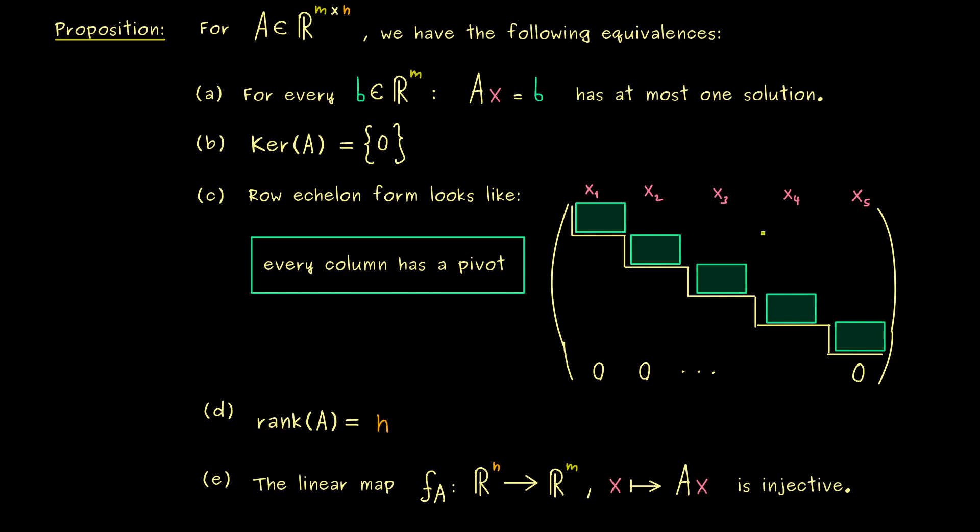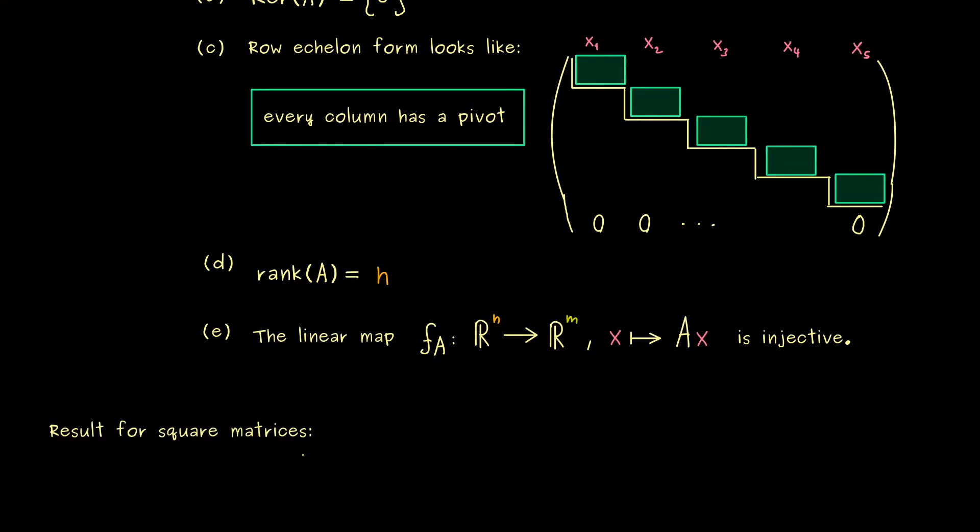Okay, so in summary you see, this is a very important statement about the uniqueness of solutions of a system of linear equations. And please note that the proof of all the equivalences we have already given in the discussion. So there is nothing we have to write down for the proof, but I want to tell you what this all means for square matrices.